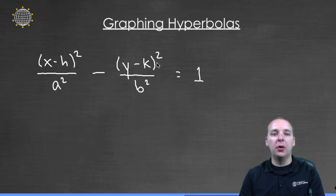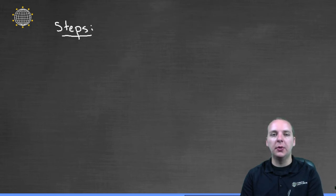Remember you could have a similar form if it started y minus k squared over a squared and the x minus h came second. But this works in either scenario, so I'm just going to explain it with this model because the ideas are interchangeable depending on which form you start with.